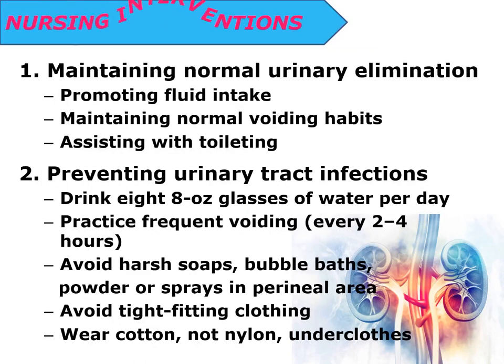Nursing interventions include: First, maintain normal urinary elimination — promote fluid intake by increasing oral fluid intake to one to two liters per day, maintain normal voiding habits, and assist with toileting. Second, prevent urinary tract infection — drink eight ounce glasses of water per day, practice frequent voiding every two to four hours, avoid harsh soaps, bubble baths, powder, or sprays in the perineal area, and avoid tight-fitting clothing; wear cotton, not nylon, underclothes.